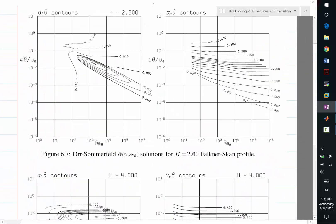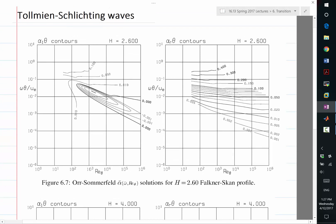Last time we derived the Orr-Sommerfeld equation whose eigen solutions are the TS waves. Some of the TS waves grow, some decay, and by growing and decaying I mean as you travel in the downstream direction, do you expect the waves to become bigger or smaller?